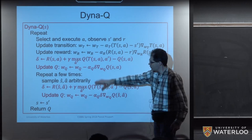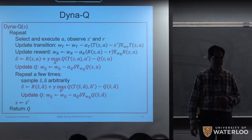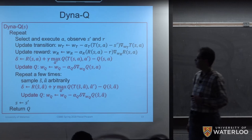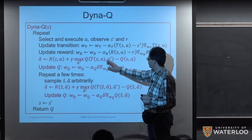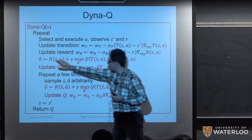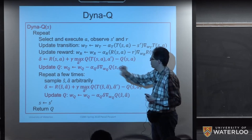A student points out that the first red update should not be using T and R functions but the actual real experience — the real S' and the real reward r. The instructor agrees this is a good catch and will correct the slide, noting that when updating based on real experience, we should use S' and r directly, not the model outputs.